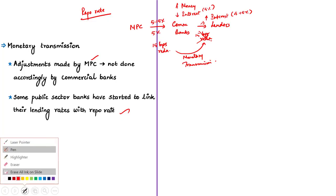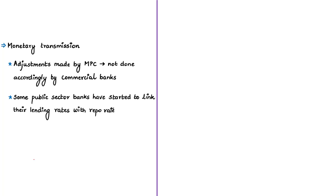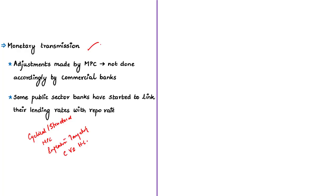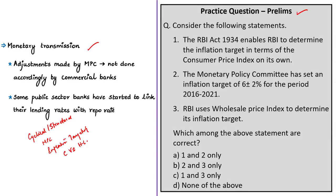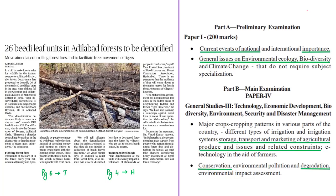To summarize this interview discussion, we have seen about cyclical economic slowdown, structural economic slowdown, the monetary policy committee, inflation targeting, core and headline inflation, and the concept of transmission of rates. Now have a look at the practice question. Let us move on to the next news article.